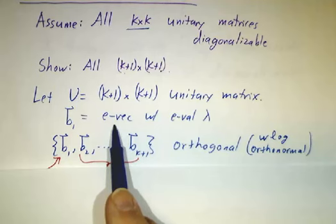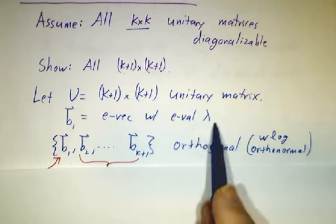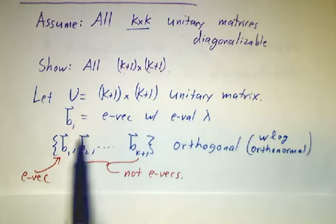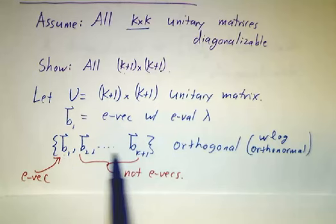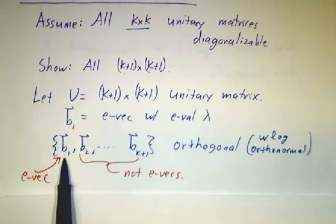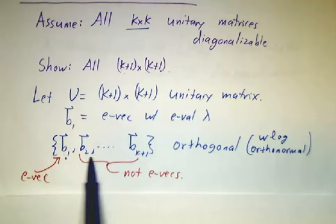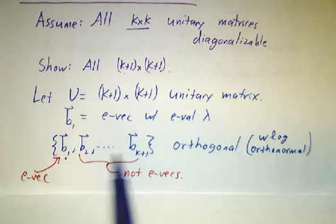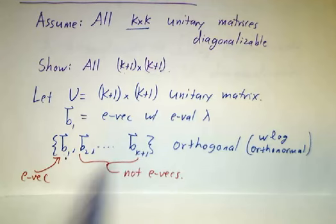So if we have a k plus 1 by k plus 1 matrix, you can always find an eigenvector. All matrices have at least one eigenvector. Let's call its eigenvalue λ. And then you can pad this out to form an orthonormal basis that starts with the eigenvector and has a bunch of other vectors. Now, this first guy is an eigenvector. These other guys can be anything. They're not eigenvectors. They're just any old vectors that together with this make an orthonormal basis.